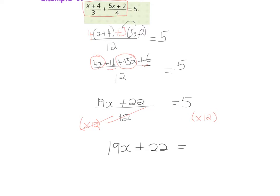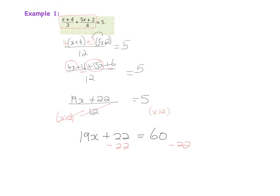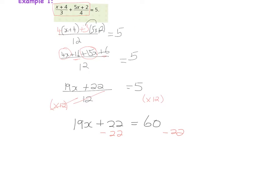5 times 12 equals 60. At this point it's all from first year: I want x's on one side and numbers on the other. I have plus 22, so to get rid of it I subtract 22 from both sides. The plus 22 and minus 22 cancel.